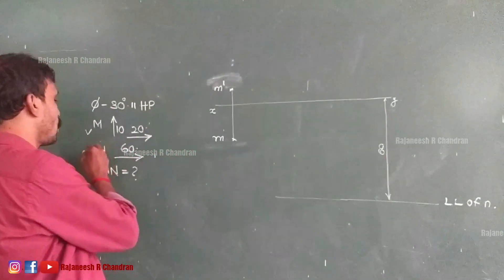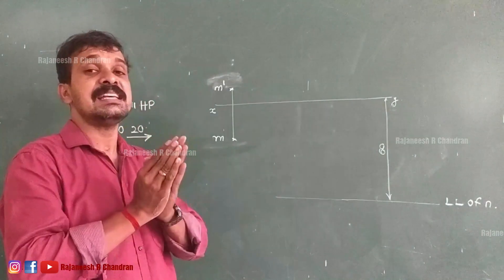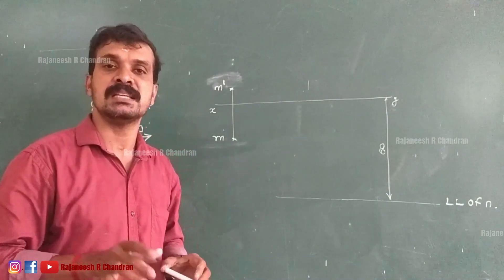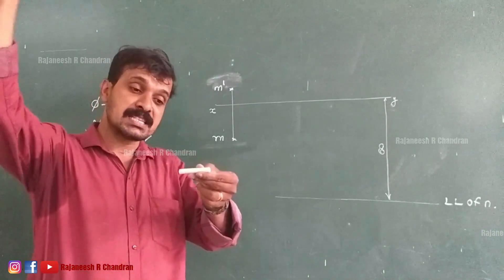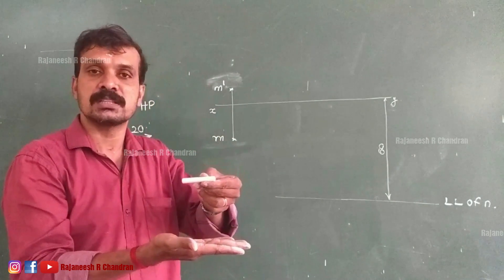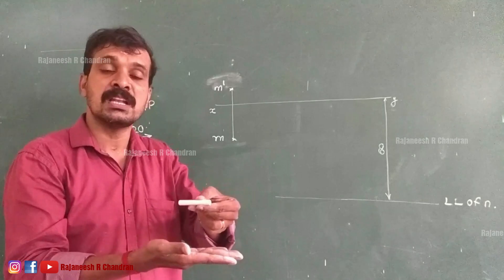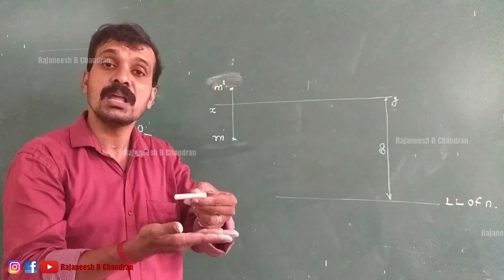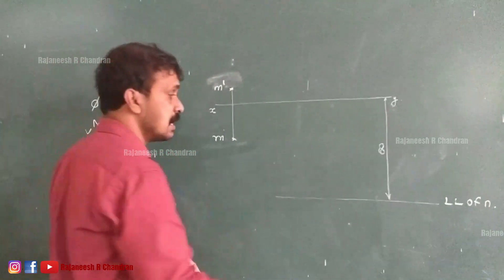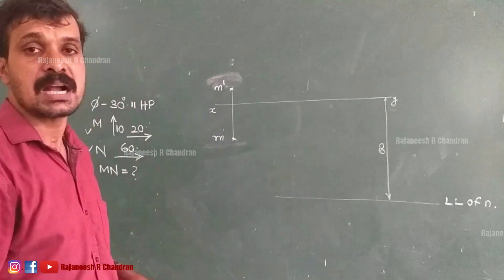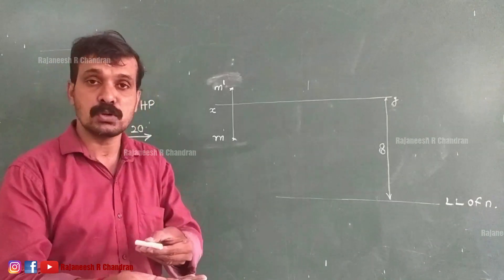We now have the locus line of small n. The condition given is that the line is inclined with VP and parallel with HP. When a line is parallel with the HP, its top view will show the true length. What is the top view of line MN? The top view will be small m to small n. We have small m, we have the locus line of small n, so somewhere in that locus line the point n will come. When a line is parallel with HP, the top view shows the true length.